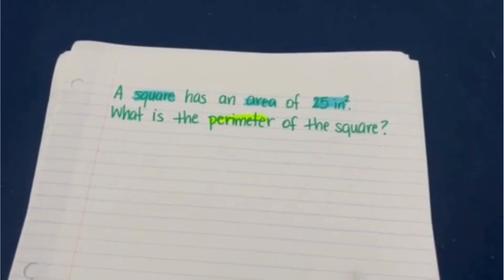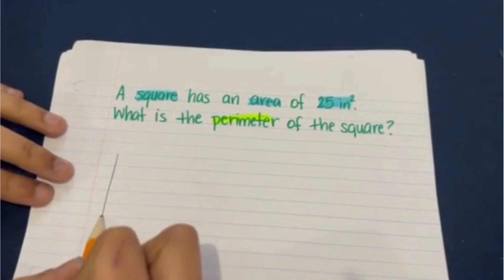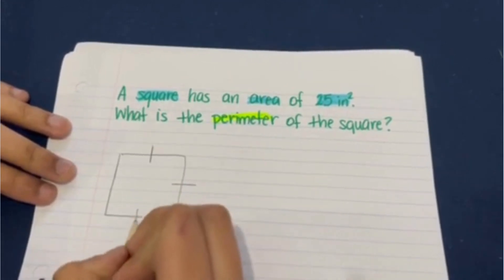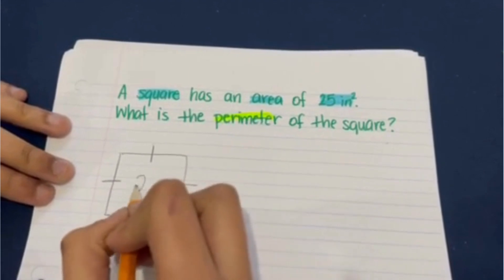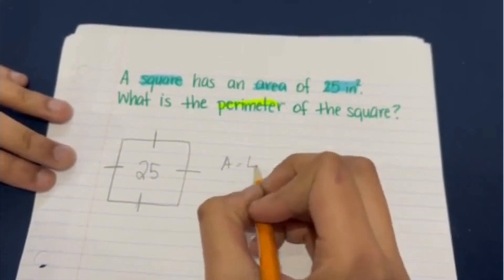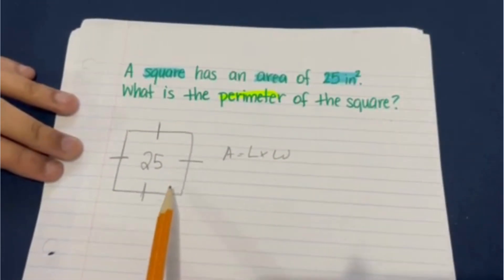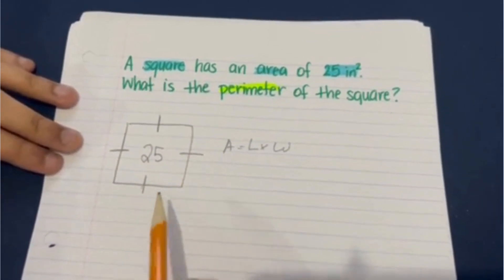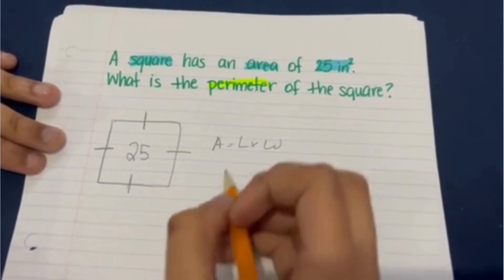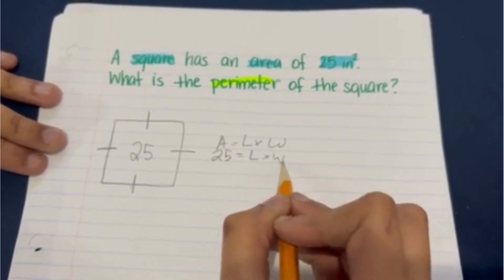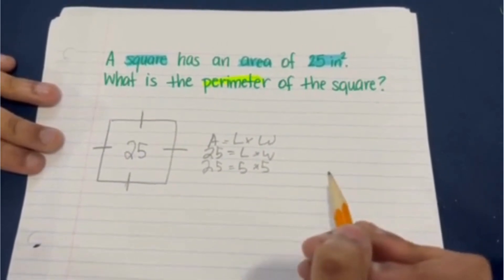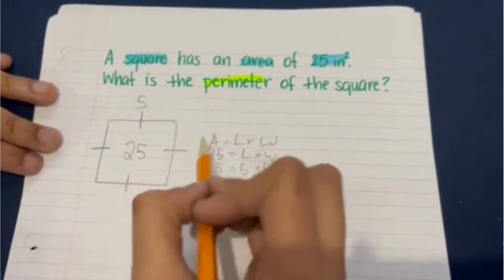Let's get to work. We know we're dealing with a square, so I want to draw a square on the side. We know that all the sides are going to be the same, and we also know the area, which is 25. Since area equals length times width and the sides of the square are all exactly the same, we have to find a number that times itself equals 25. We know those two numbers will be five, because five times five equals 25.